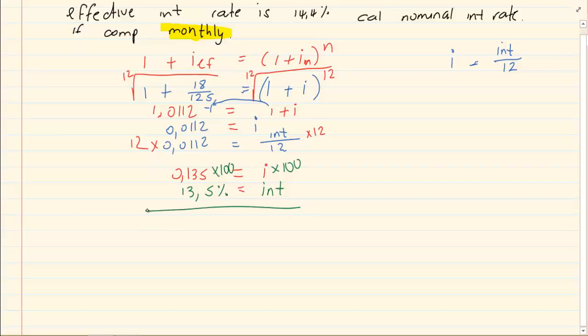Effective was 14.4 and nominal which is what the bank offered was 13.5. Thank you for watching.